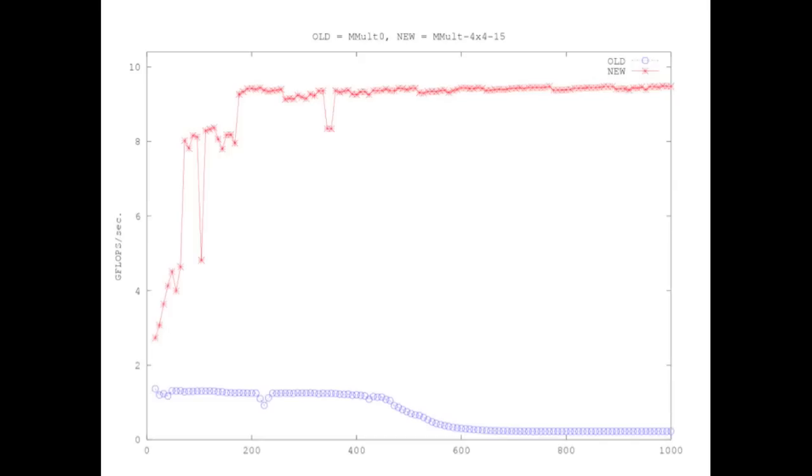The bottom line is zero percent. And the actual performance that the triple nested loop achieves is depicted by this blue line. And you notice that it's pretty pathetic.